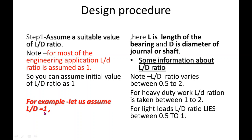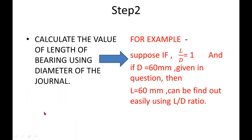In step number 2, we will calculate the length of the bearing using the assumed value of L by D ratio and the diameter of the journal provided. The length of the bearing is calculated as 60 mm.